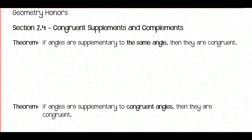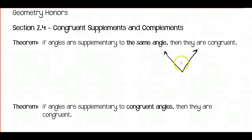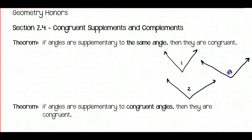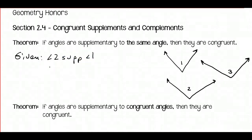For any theorem we could go and prove it; we're just not going to for most of them. The first theorem says: if angles are supplementary to the same angle, then they are congruent. Here's what this might look like. If I have an angle — I'll call that angle 1 — and then I have angle 2 and angle 3. Let's say we were given that angle 2 is supplementary to angle 1, and angle 3 is also supplementary to angle 1. We can see that they're supplementary to the same angle.